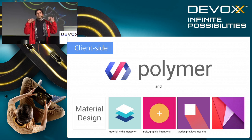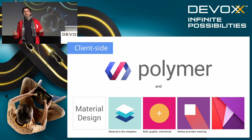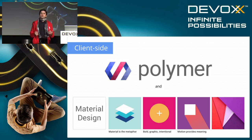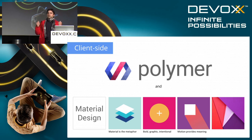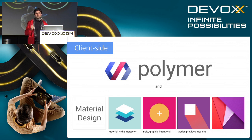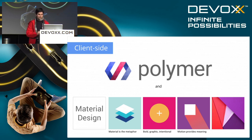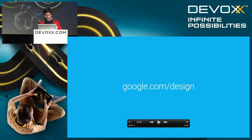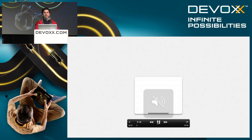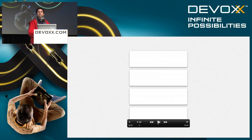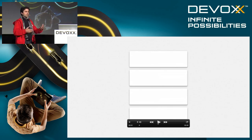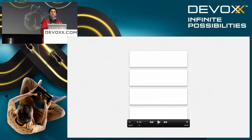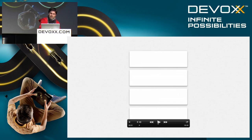At a high level, the fundamental metaphor in material design is a piece of paper — but a kind of magical piece of paper that can stretch, cut, and rearrange. It is also bold, graphical, and intentional, and provides a lot of meaning through motion. This is the basic metaphor: magic paper that stretches, that can cut itself in pieces, but still feels to the user as a touchable, palpable interface. It has a subtle drop shadow, but apart from that it is all flat.